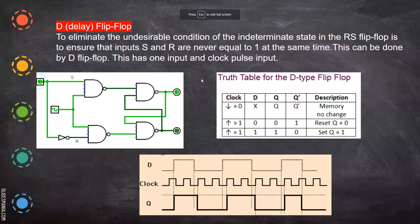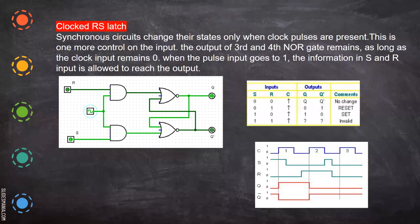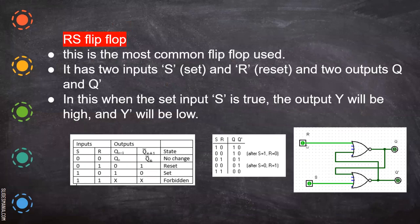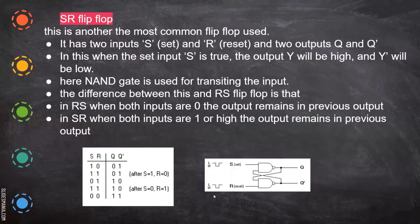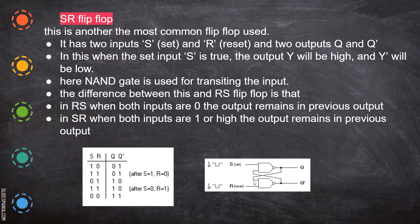In the previous video, we have seen the SR flip-flop. Both have a drawback where R is separate and S is separate — both inputs are separate — and it has two outputs, Q and Q bar. The drawback is that giving both inputs as 1 is an undesirable condition, called the forbidden condition, because we cannot predict the output. In SR also, giving both inputs as 0 is an undesirable condition.